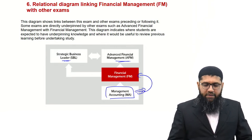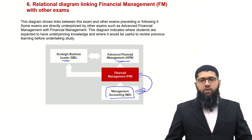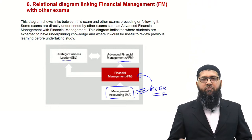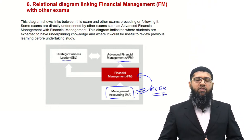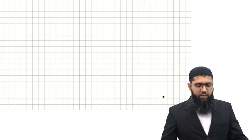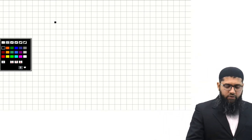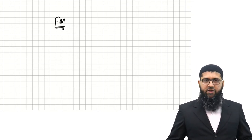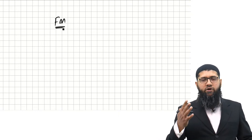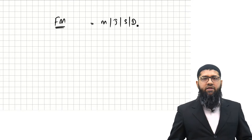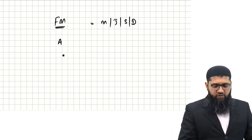The Management Accounting paper you have gone through is solely based on MCQs, but the Financial Management paper is different. The ACCA Financial Management paper is examined on a computer-based platform, examined four times a year — in March, June, September, and December.